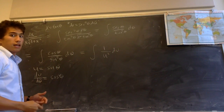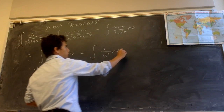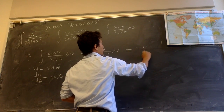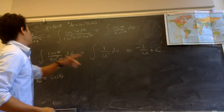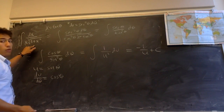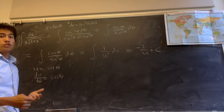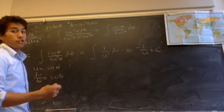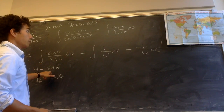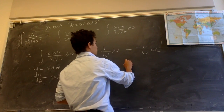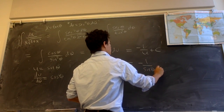This is an integral we know how to do. It equals negative 1 over u plus c. Now we want to write this in terms of x, since our original integral was in terms of x. We've made two substitutions, so we need to back-substitute two times. Since u equals sine theta, this easy back-substitution gives us negative 1 over sine theta plus c.